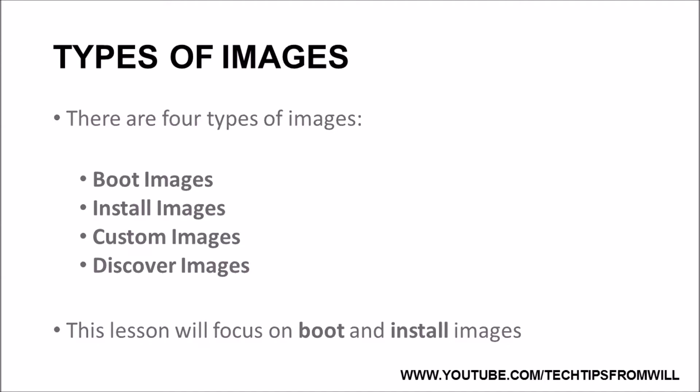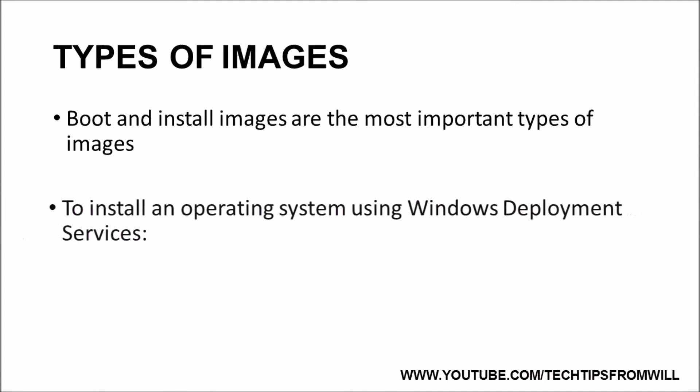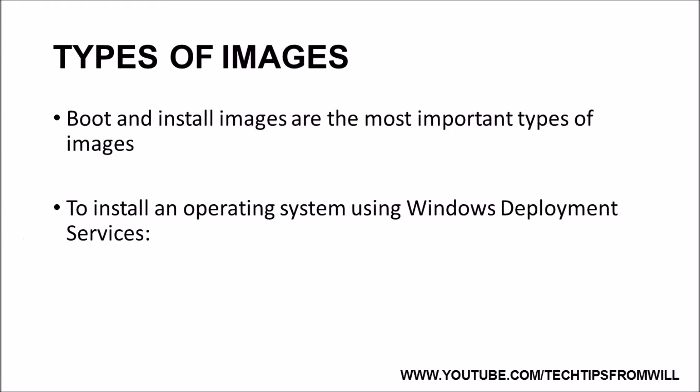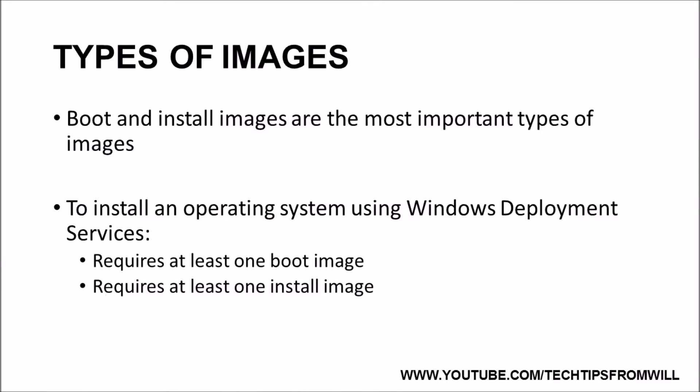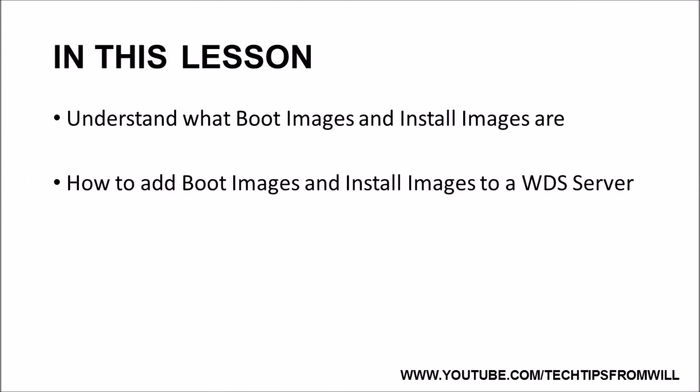Boot and install images are the easiest, and arguably the most important, types of images to understand. To install operating systems using Windows Deployment Services, you must add at least one boot image and one install image to the WDS server. Don't worry, I will cover custom images and discover images in later lessons. The aim of this lesson is to understand what boot images and install images are, what they are used for, and how to add them to a WDS server. Without further ado, let's get started.